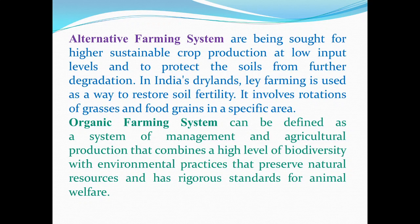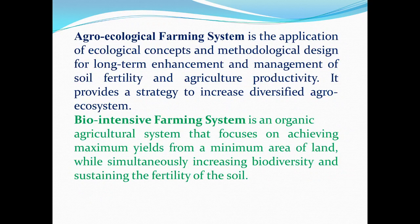Organic farming system can be defined as a system of management and agricultural production that combines a high level of biodiversity with environmental practices that preserve natural resources and has rigorous standards for animal welfare. Sikkim became India's first fully organic state, and almost all of the north-eastern states are perfectly fit for organic farming.